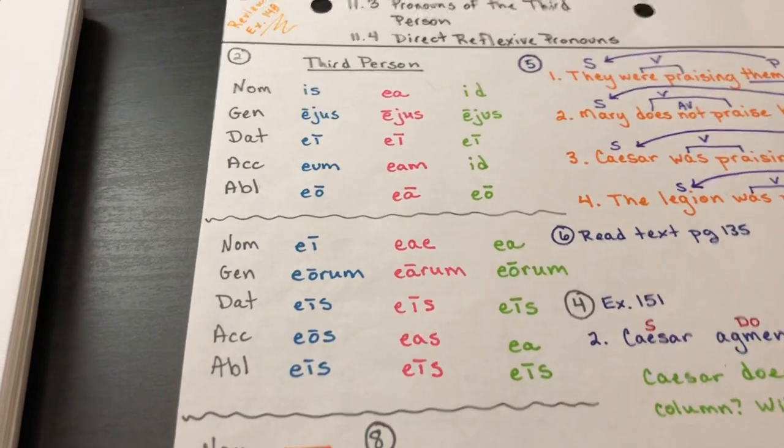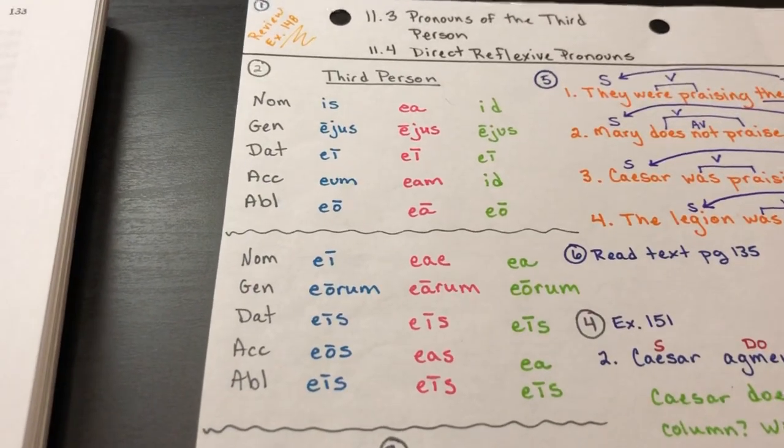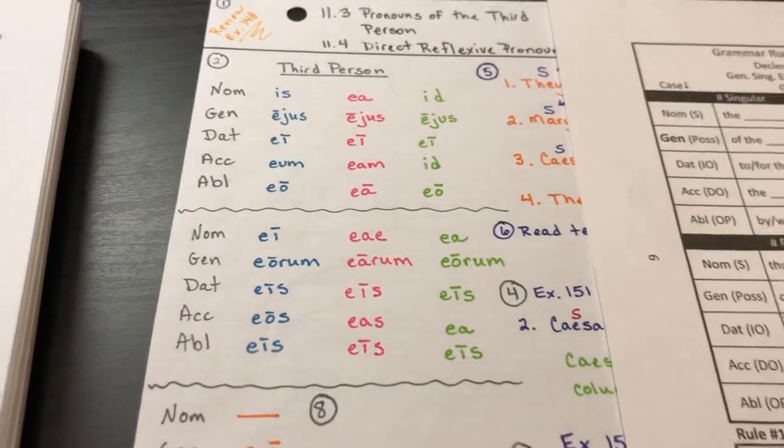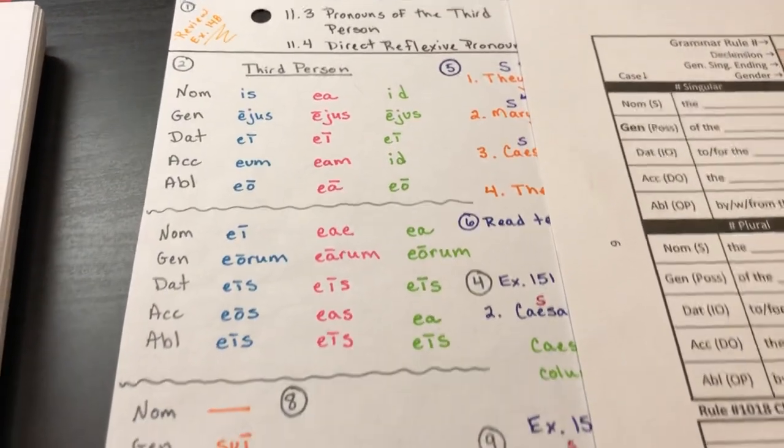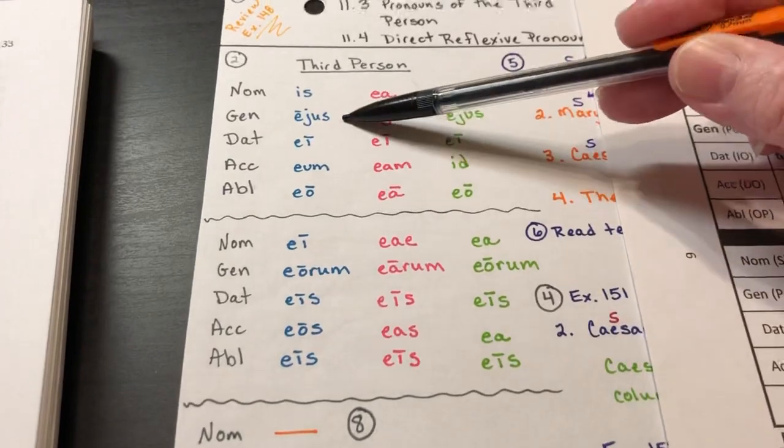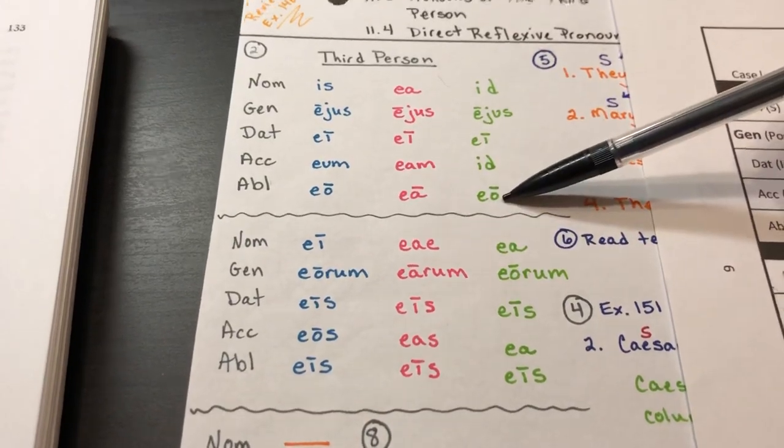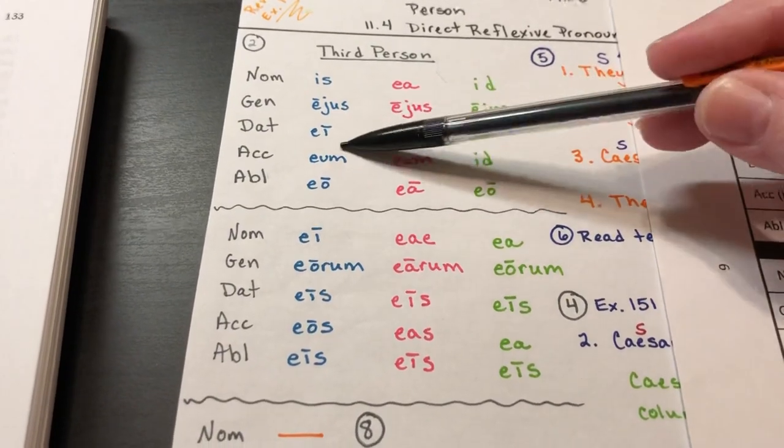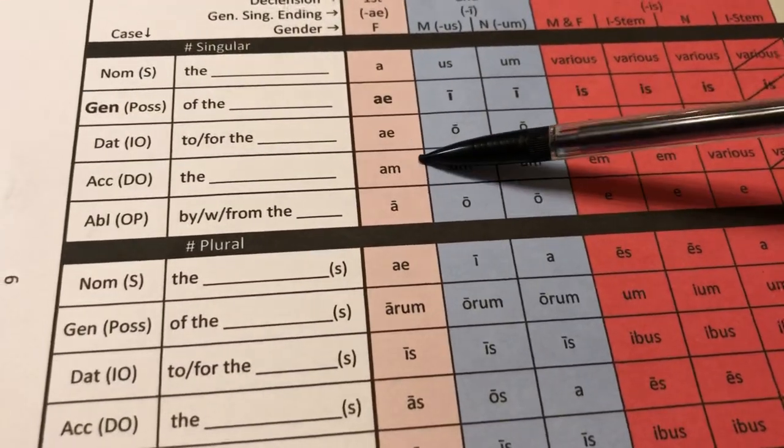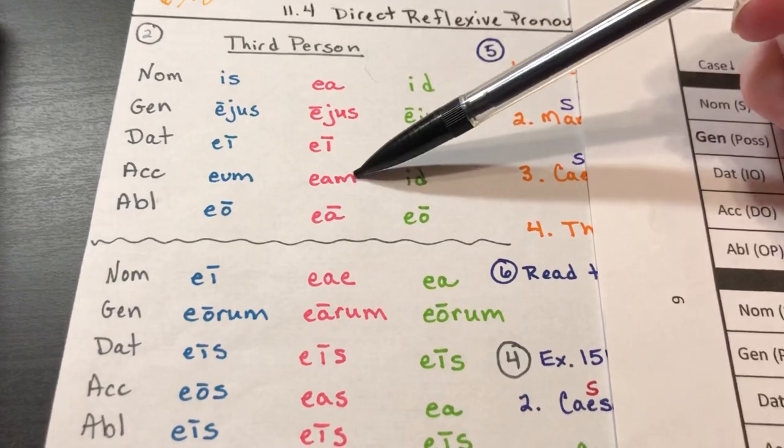We came to the conclusion it was third person, but we did do some comparisons with our declension chart. Some of the observations they made: we noticed aeus in all three. We noticed down here we have a-o, a-a, a-o. That was kind of familiar. These three were all the same.